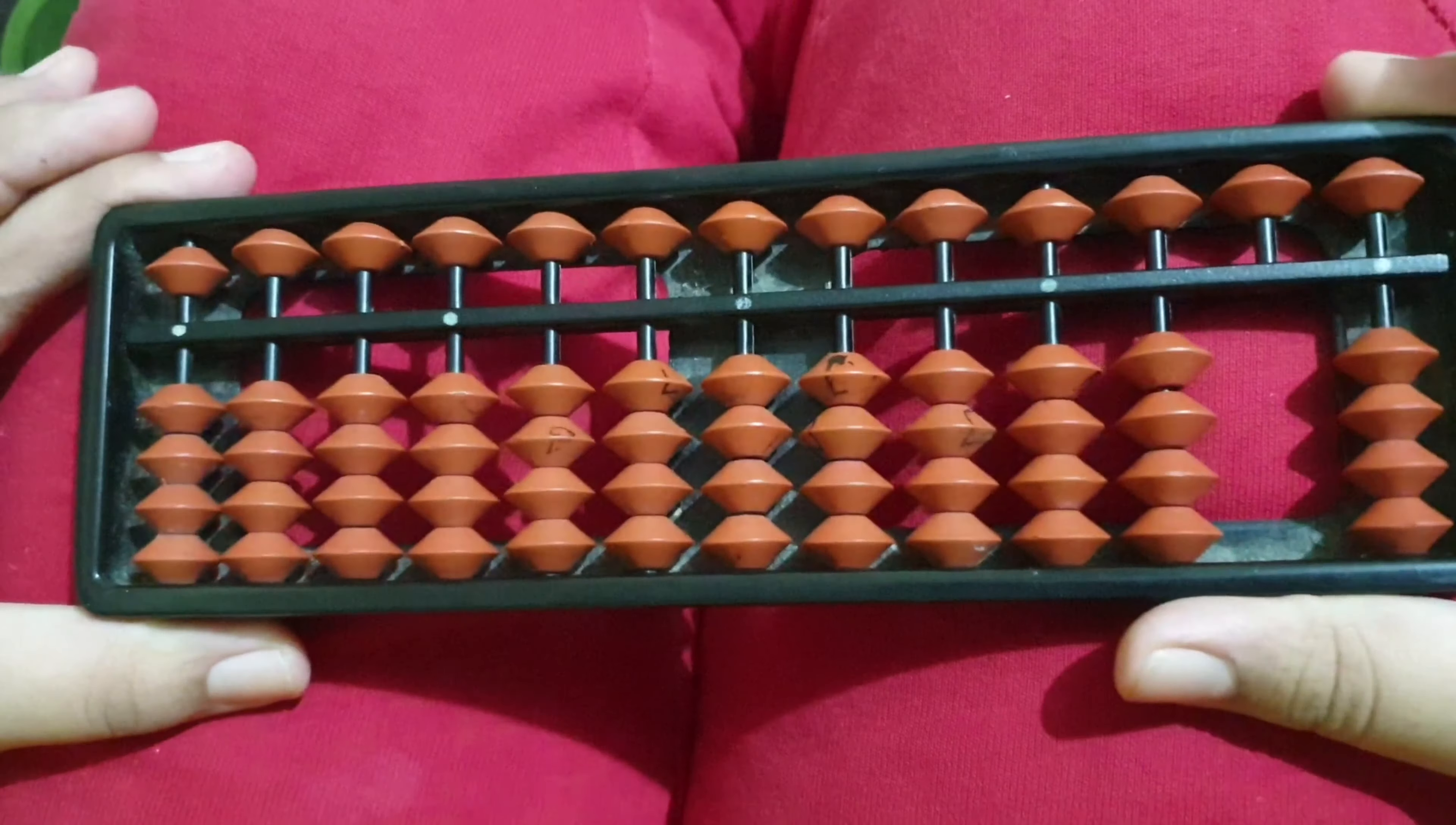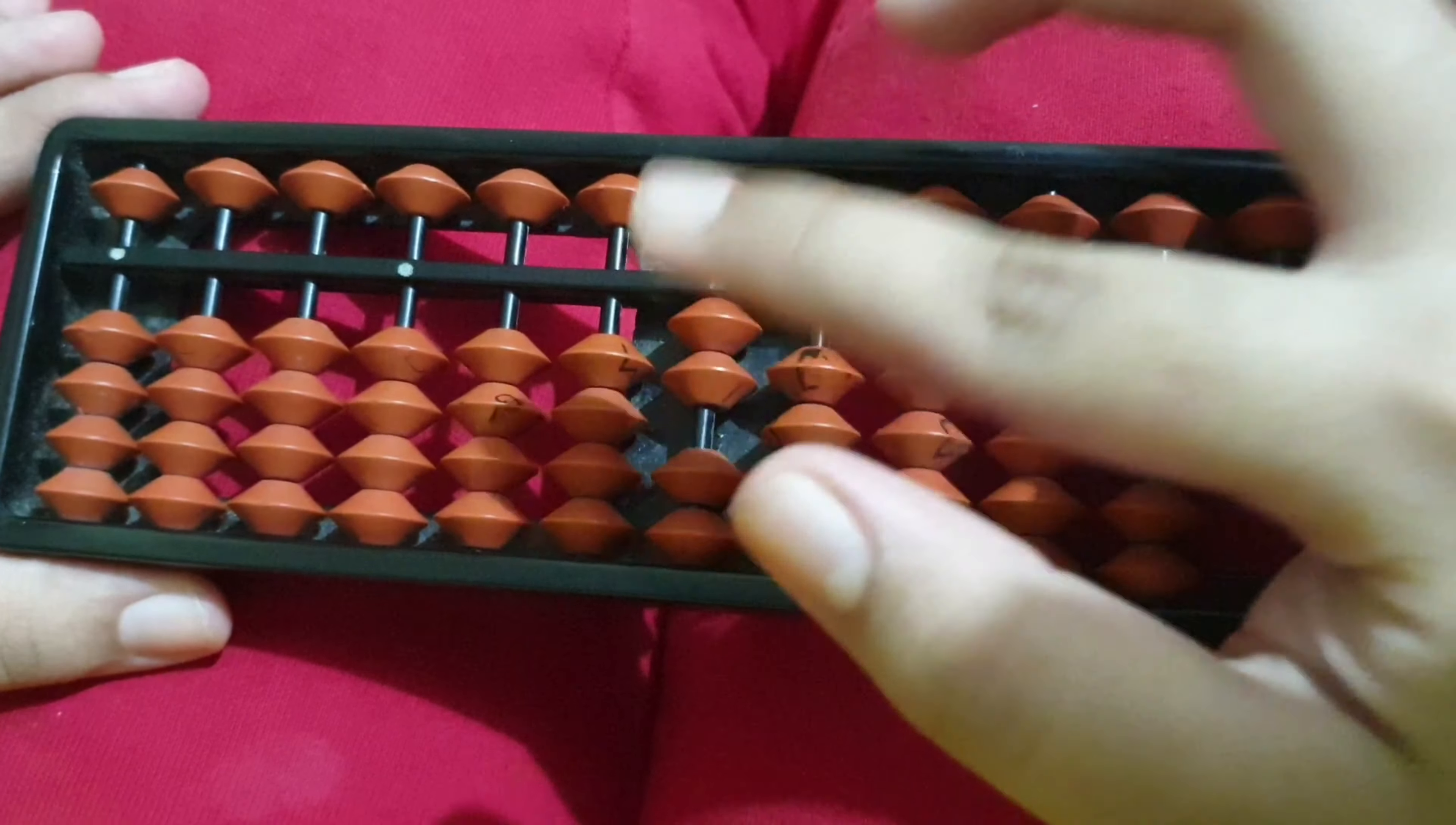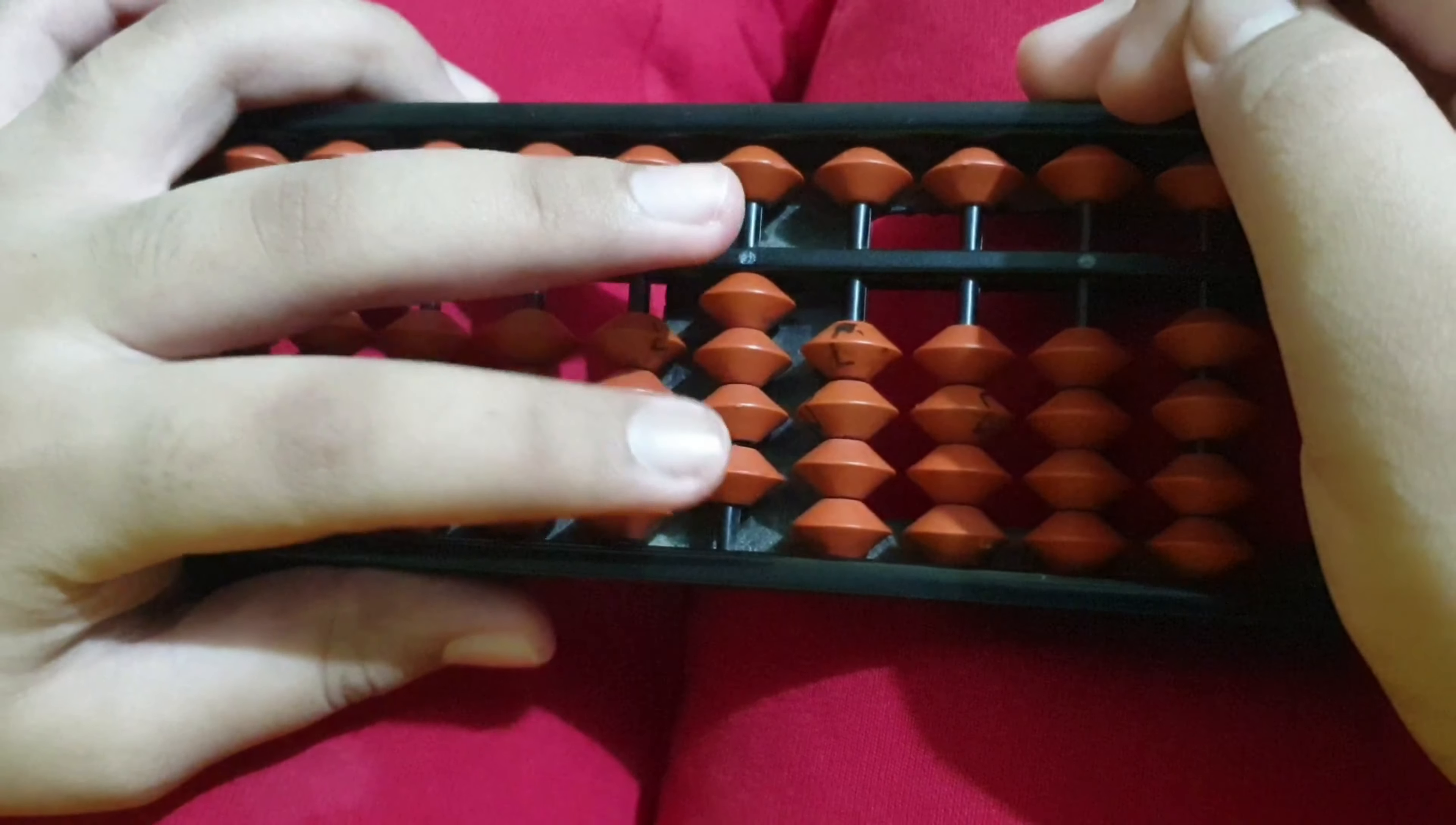So first let's try adding 1 plus 1. What I've done is first I've added one bead here and then again I'm going to add one more bead here, so it is 1 plus 1 equals 2. Now if I want to add 2 plus 2, I do it like this. Now I get my answer as 2 plus 2 equals 4.